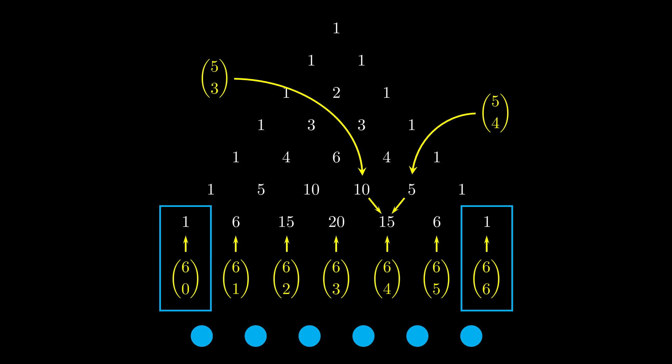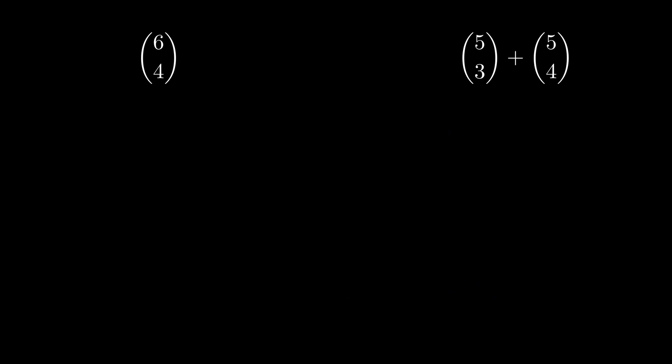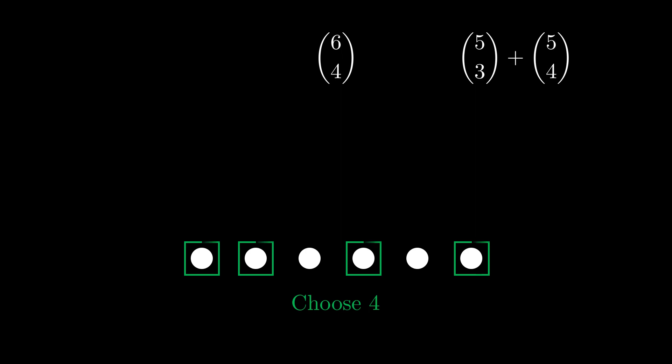6 choose 4 versus 5 choose 3 and 5 choose 4. So first we think about what 6 choose 4 means. It means I take 6 objects and I choose 4 of them. So I could choose these 4 or I could choose those 4. And I'm counting how many of those selections I've got. And that's as simple as 6 choose 4 is. That's all it does.